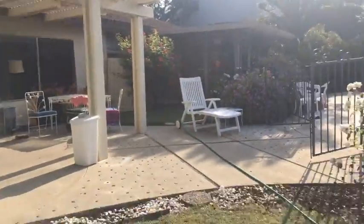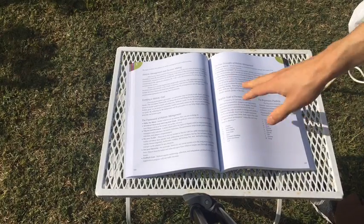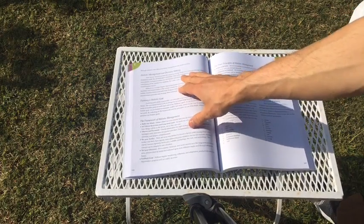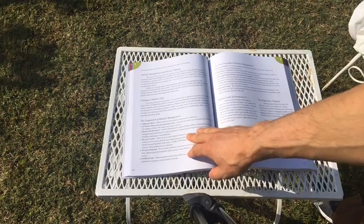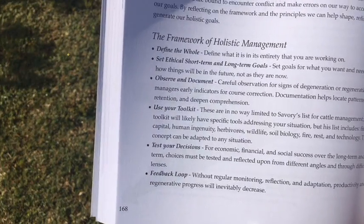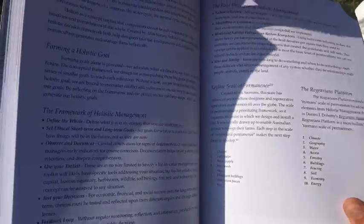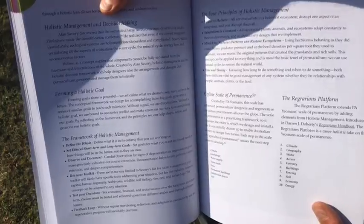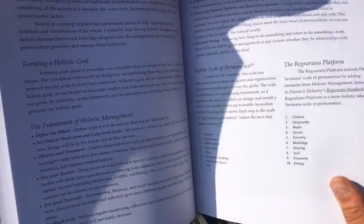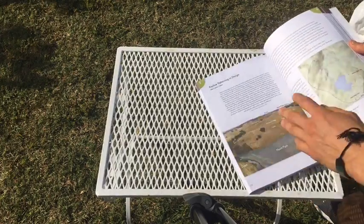So I want to show you this section and do a reading from one of my books. I've got this small section of my book where I introduce holistic management, the decision-making formula, holistic goal, and the framework of holistic management — define the whole, observe and document. It's all Alan Savory stuff. And over on the other side, the Keyline Scale of Permanence and the Regrarians Platform. These are all different frameworks that we use when we design.